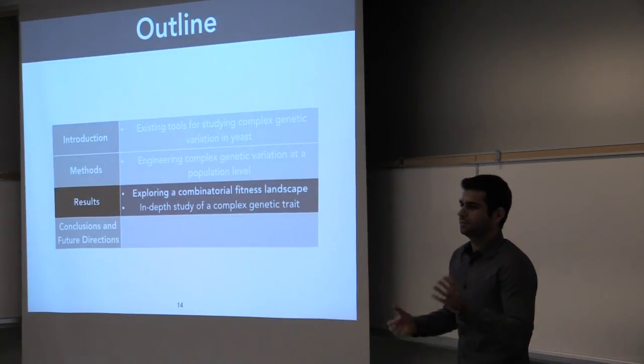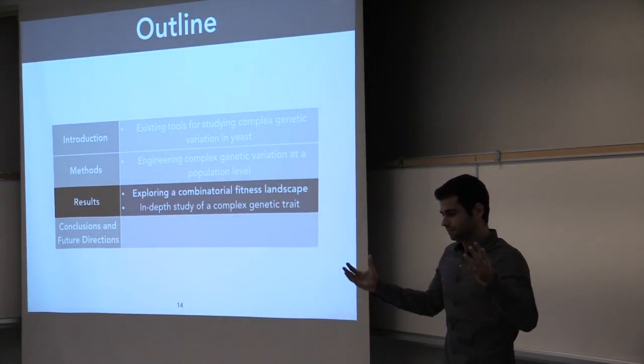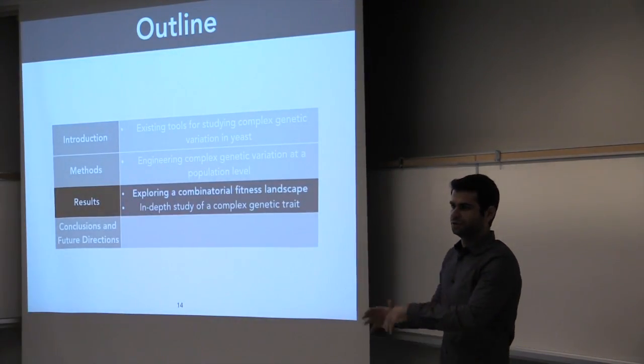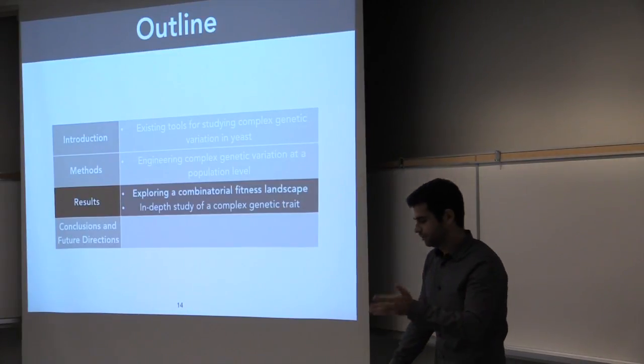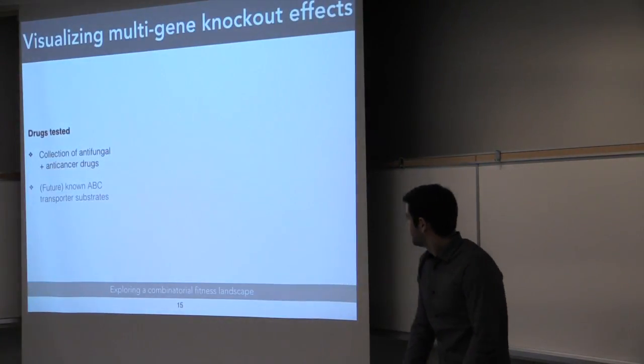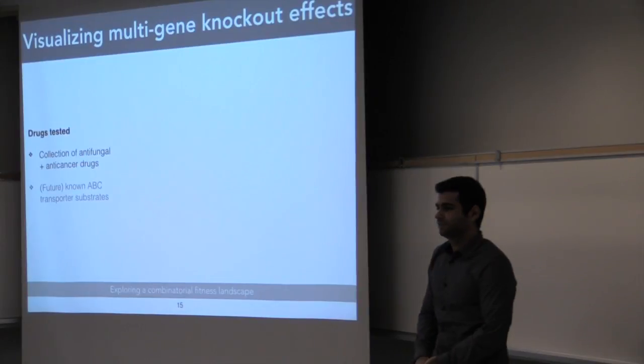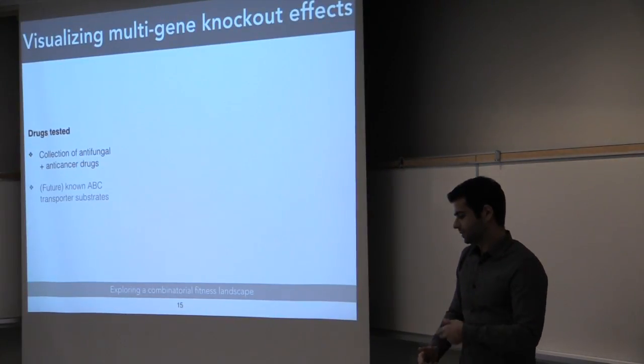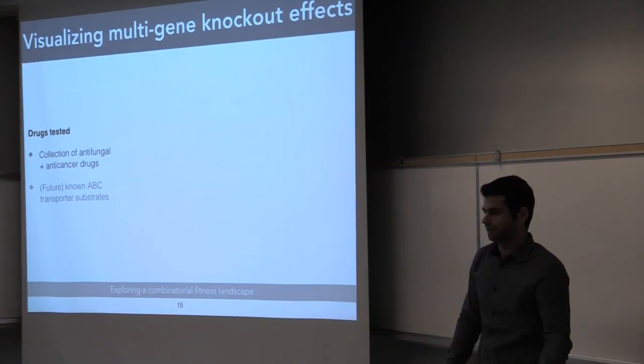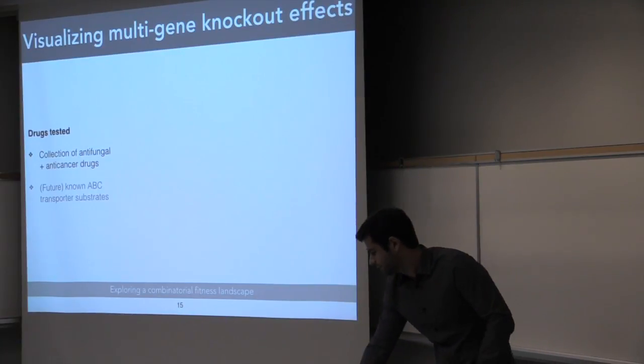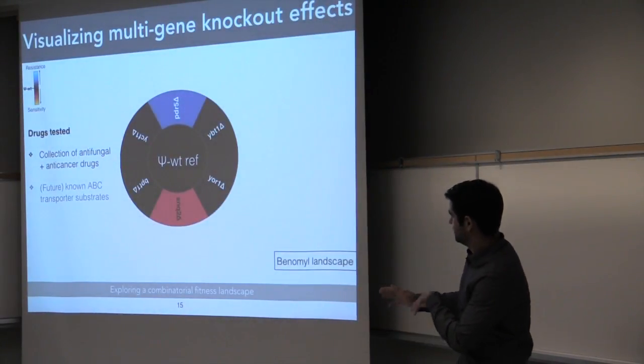So now I'll be talking about, first of all, how we visualize the data in a broad scale, and I'm going to zoom into one trait and show you something cool we found. So far we've tested a collection of antifungal and anticancer drugs, and in the future we'll be expanding this to include known substrates of all the transporters. But for now, we're only going to focus on six of these genes.